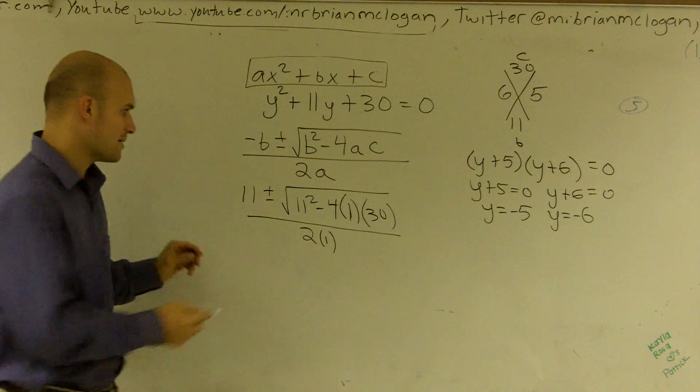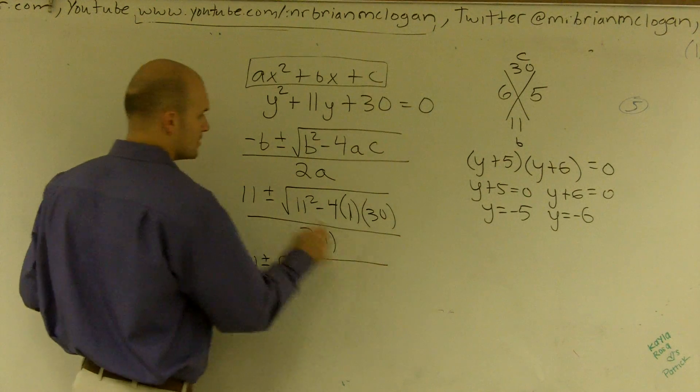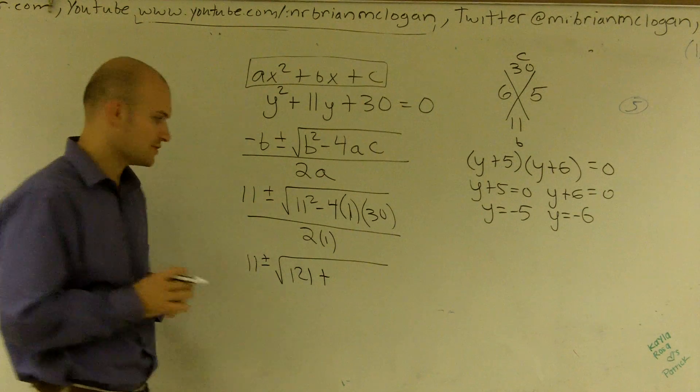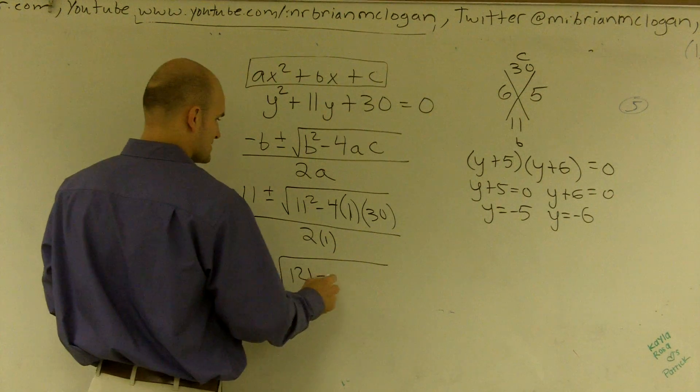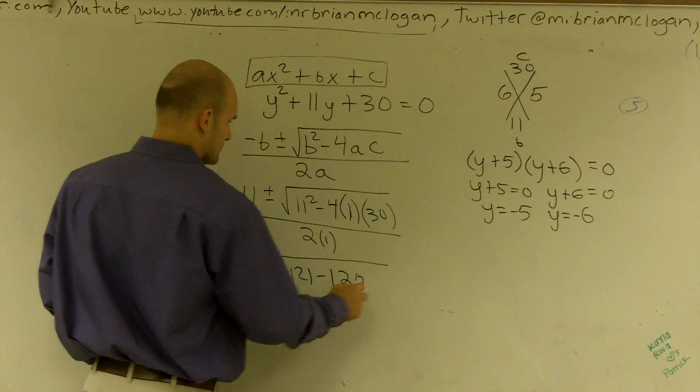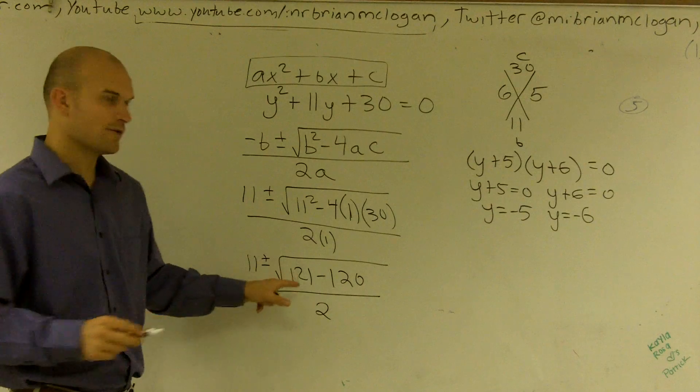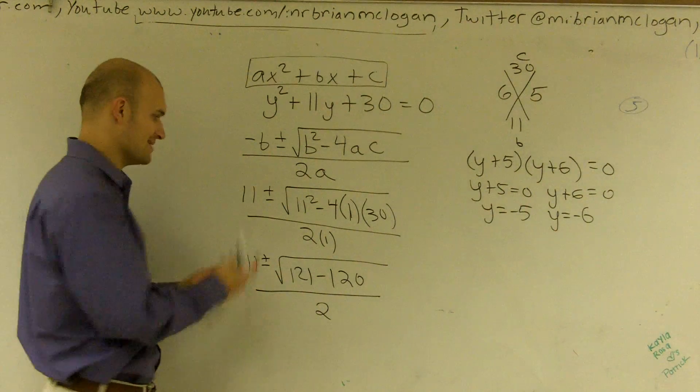All right, so now I'm just going to need to simplify my work. So I have 11 plus or minus the square root of 11 squared is 121, minus 4 times 1 times 30 is minus 120, all over 2.